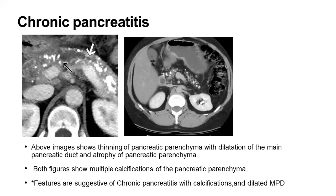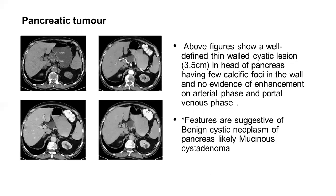This is a case of chronic pancreatitis. There is thinning of the pancreatic parenchyma with dilation of the main pancreatic duct and atrophy of parenchyma. This is a case of a pancreatic tumor. There is a well-defined thin-walled cystic lesion in the head of the pancreas with a few calcific foci in the wall, features suggestive of a benign cystic neoplasm of the pancreas.